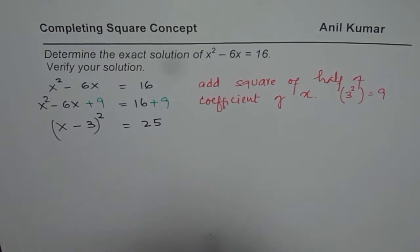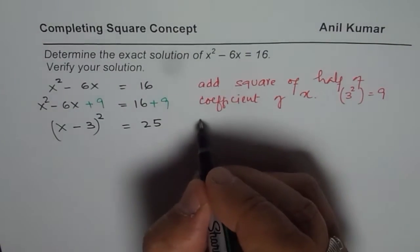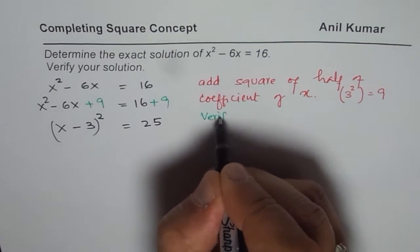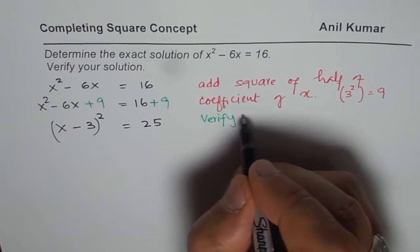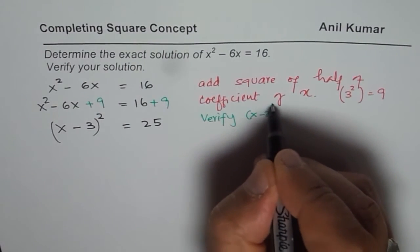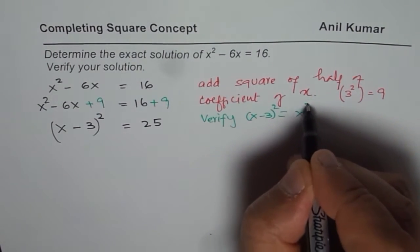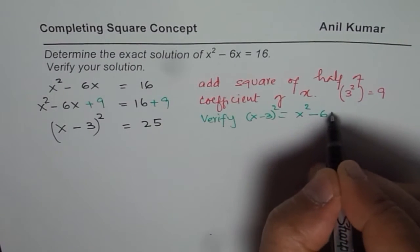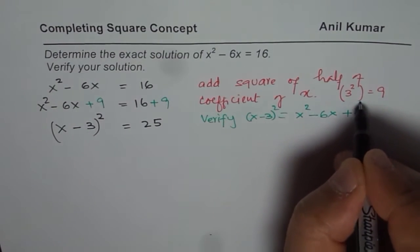You can verify x minus 3 whole square. So, as an exercise, verify that x minus 3 whole square is indeed equals to x squared minus 6x plus 3 square which is 9.